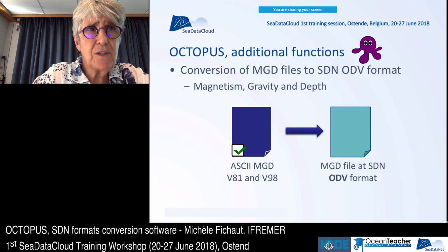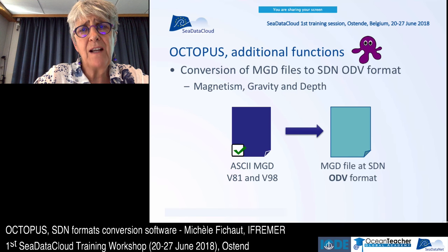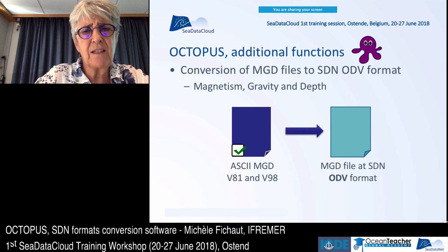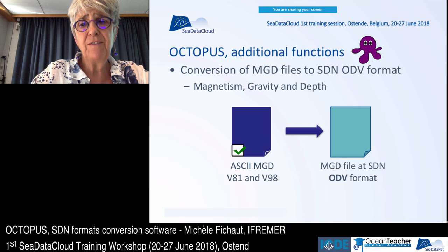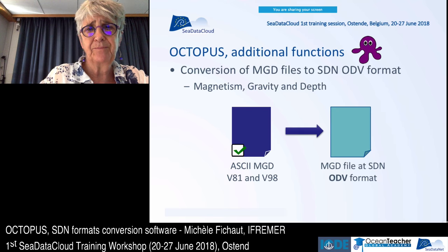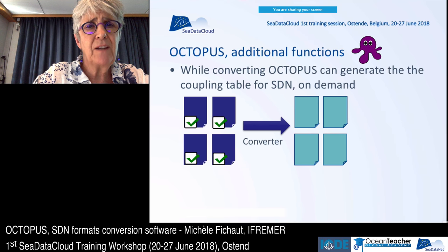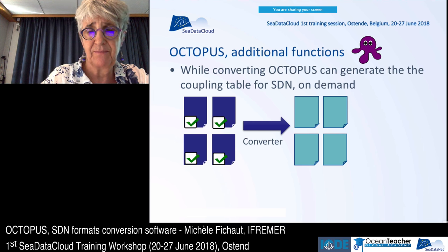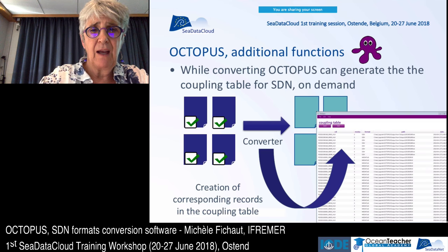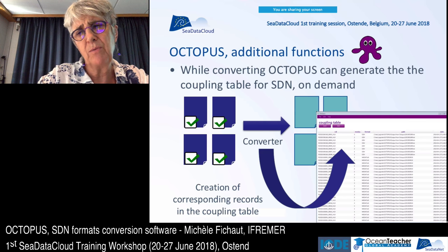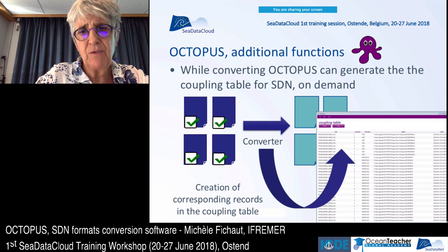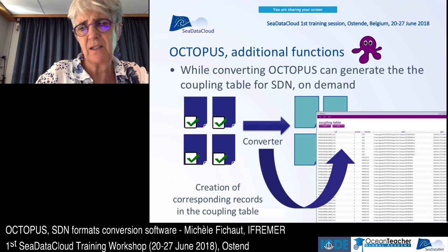Octopus has additional functions for MGD files, which are magnetism, gravity and depth files. It is able to convert ASCII MGD version 81 or version 98 to MGD files at cDataNet ODV format. While converting, Octopus can generate the coupling table for cDataNet on demand. At the time of conversion, a coupling table will be generated in an embedded database in Octopus, and then you can export it as a flat file.